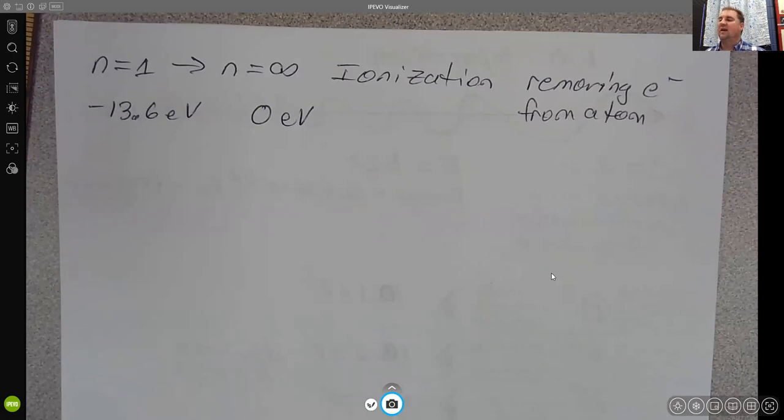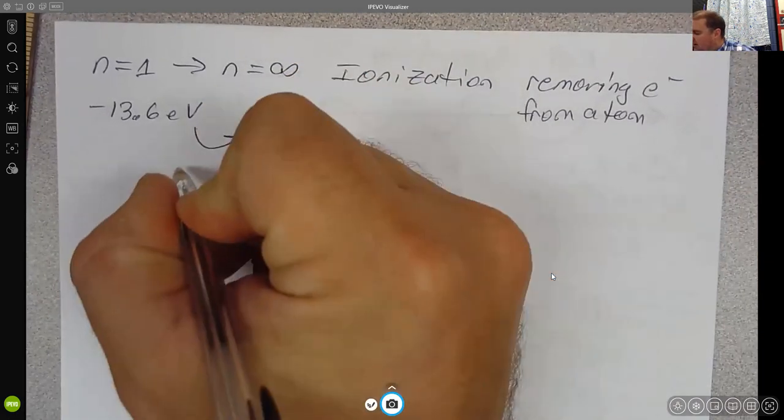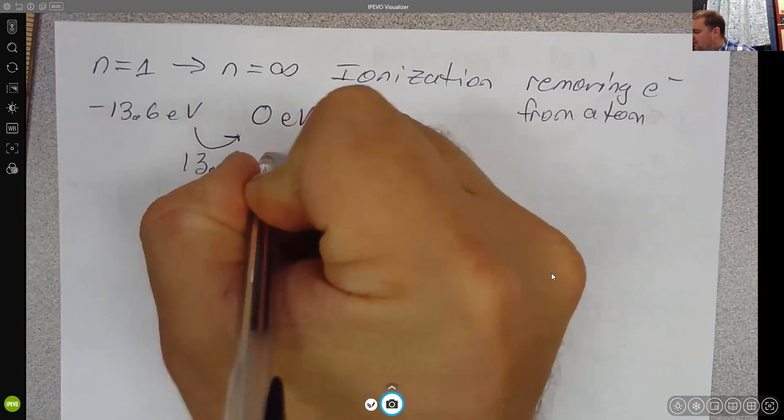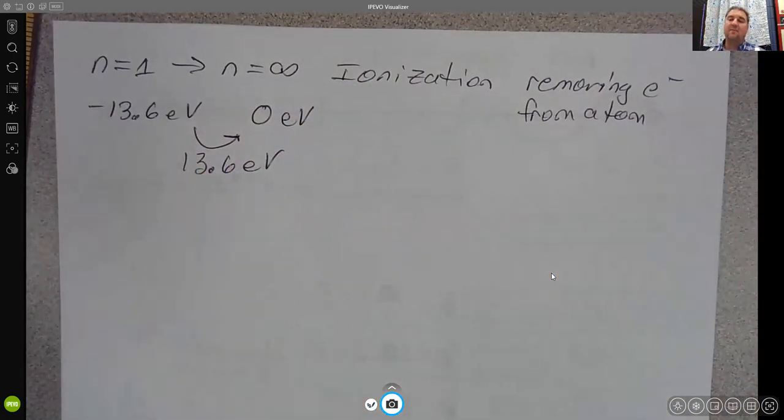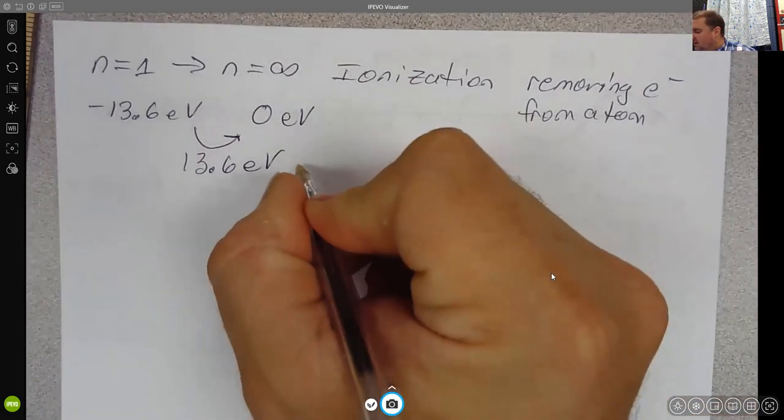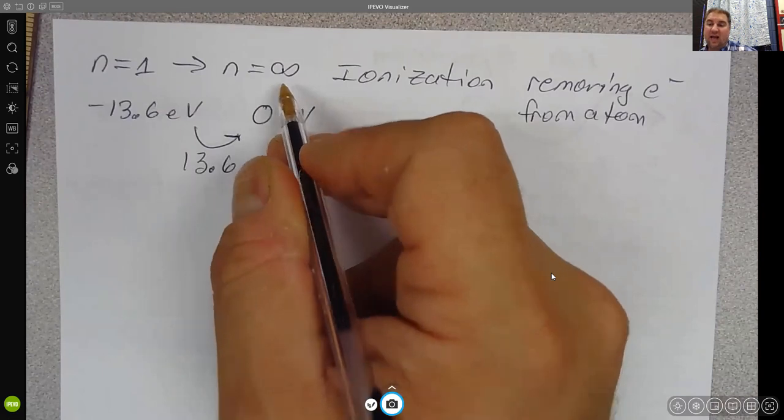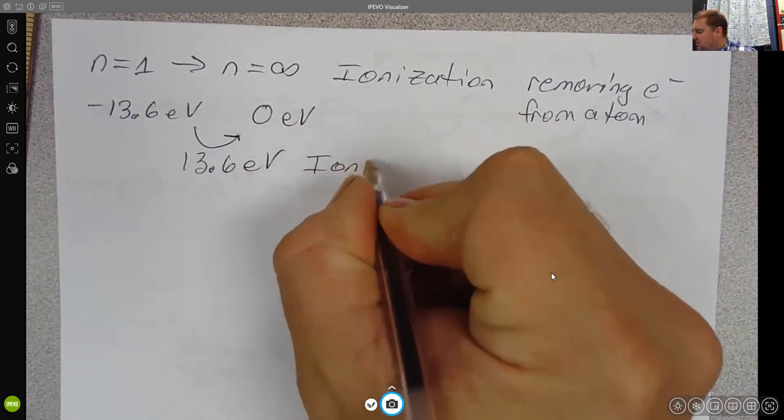The atom left behind would have a positive charge. To take the electron from n equals one to n equals infinity requires that we put in 13.6 electron volts for the hydrogen atom. Because that is the difference in these energies and the energy required to ionize the atom, this value to go from n equals one to n equals infinity for any atom is known as the ionization potential.